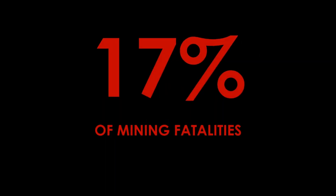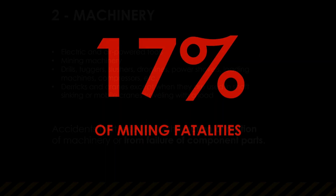Number two: machinery, accounting for 17% of mining fatalities. MSHA's definition includes examples such as electric and air-powered tools, drills, drag lines, derricks, and cranes. They specify that these accidents must result from the action or motion of the machinery or from failure of its components.